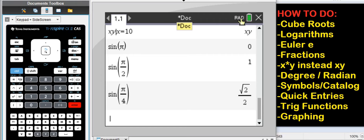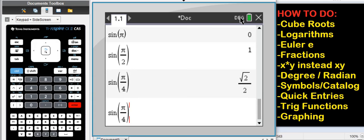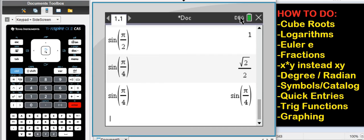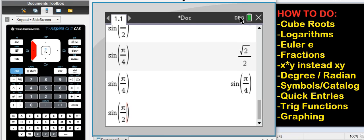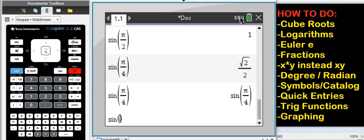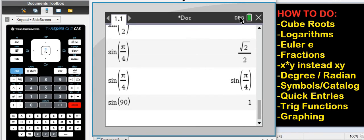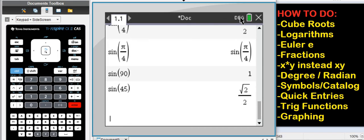If I now change to degrees and do sine of pi over 4, it just says sine of pi over 4. Because this is supposed to be degrees. So sine of 90 degrees is 1. Sine of 45 degrees is root 2 over 2. So switch degree radian. If you're in physics, you're in degree. If you're in calculus, you're in radian.